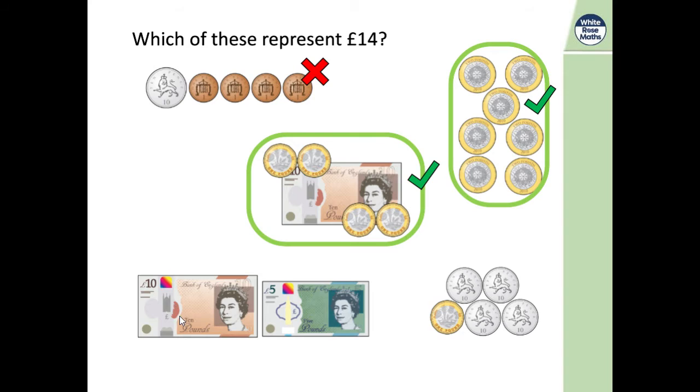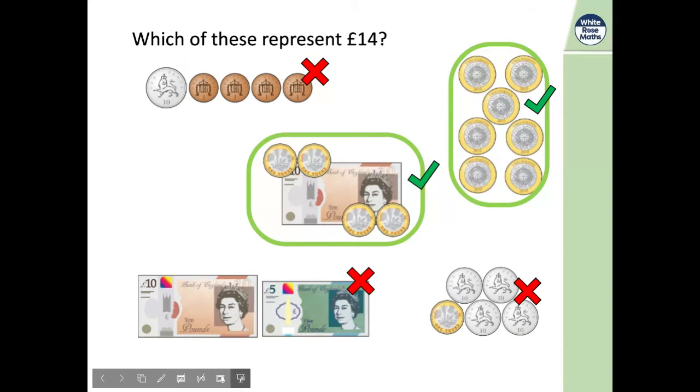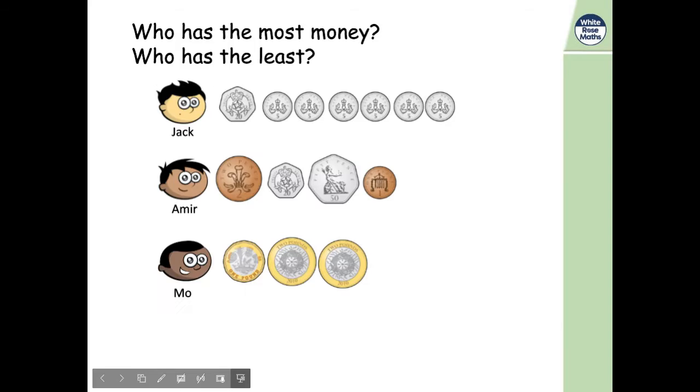Here we have got 10 pounds and five pounds. So it's not, it's too much, it's one pound too much. And our last one, we have got one pound and four 10 pences. So one pound 40. So not enough this time. Well done if you spotted both of those. Well done if you just spotted one. Let's move on to our next.